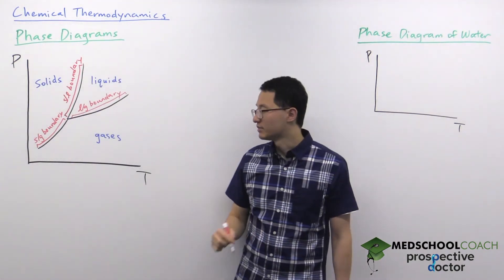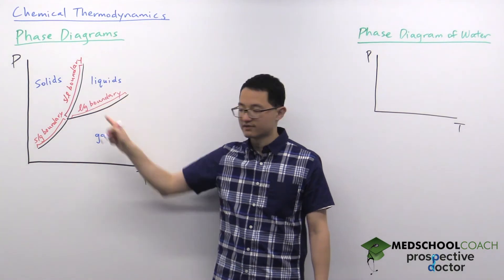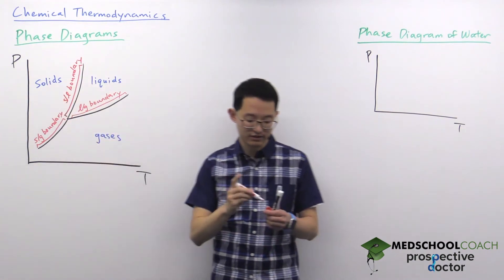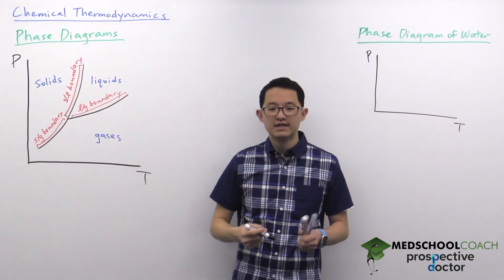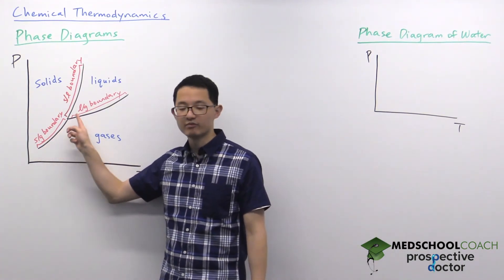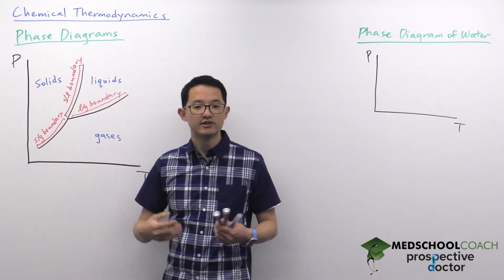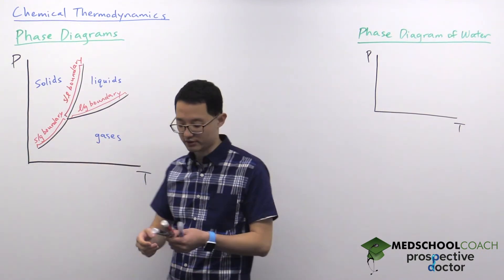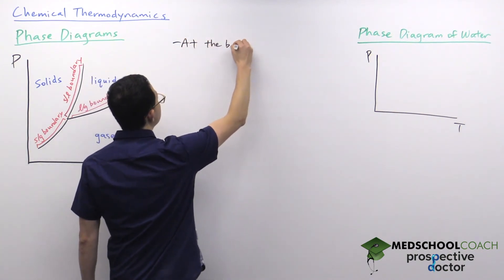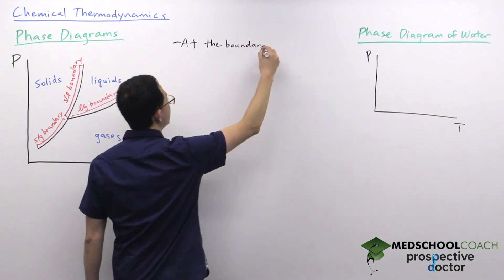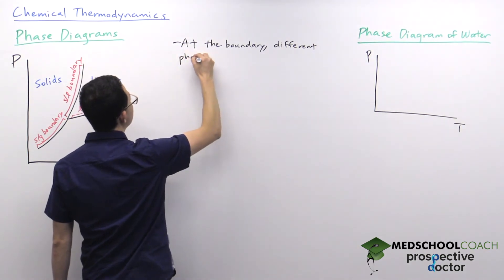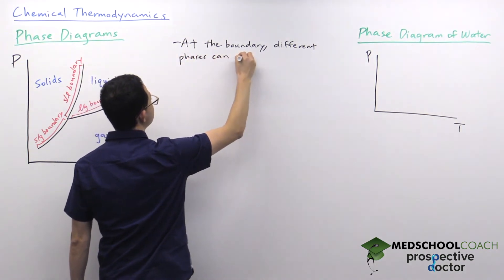These boundaries are important because at different parts of the graph we can say here we only have gases, here we only have liquids, here we only have solids. But at the boundaries, the two phases can coexist — meaning at every point along a boundary line you can have a mixture of both phases, and the two are at equilibrium with each other.